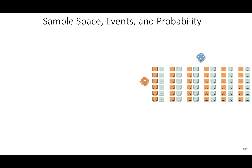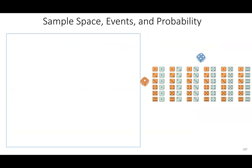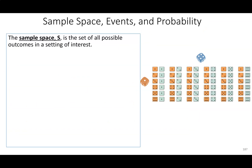We have our sample space, events, and probabilities. We'll start by describing a sample space. The sample space — notation-wise, it's like a curly S, but it's okay if you just use a capital S. It's the set of all possible outcomes.